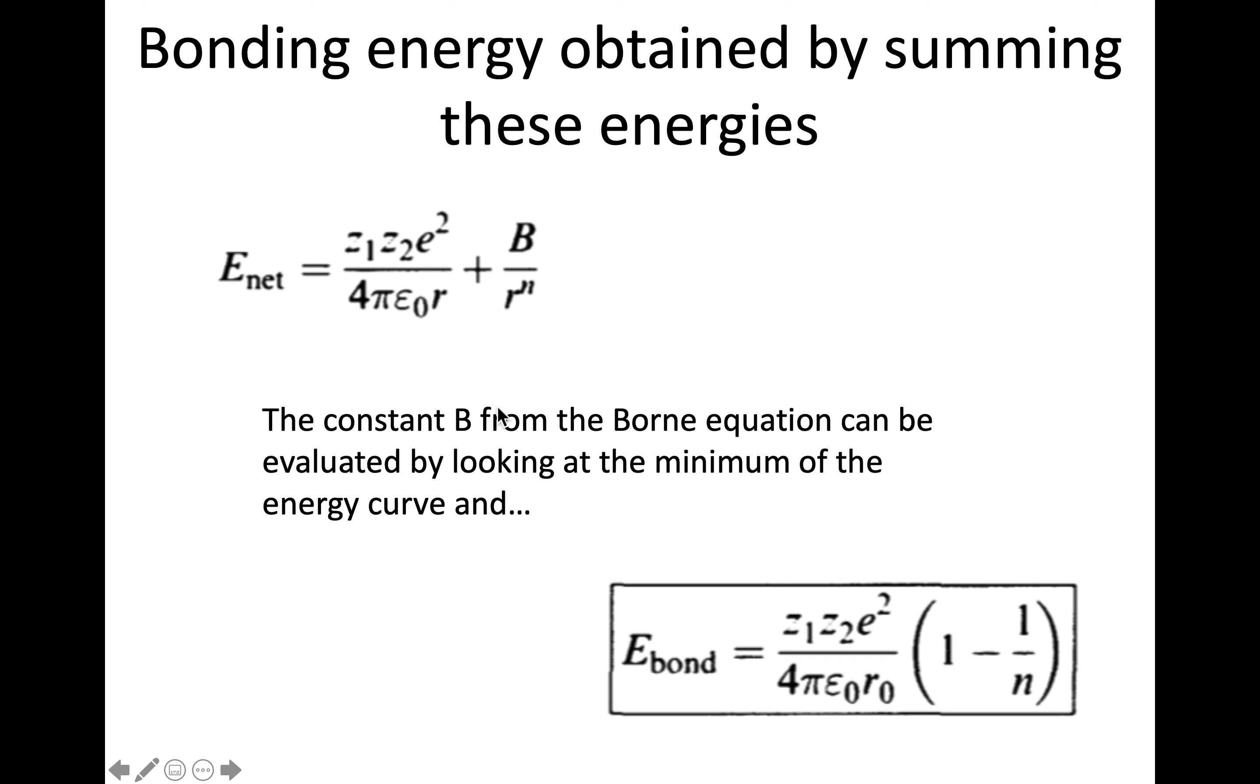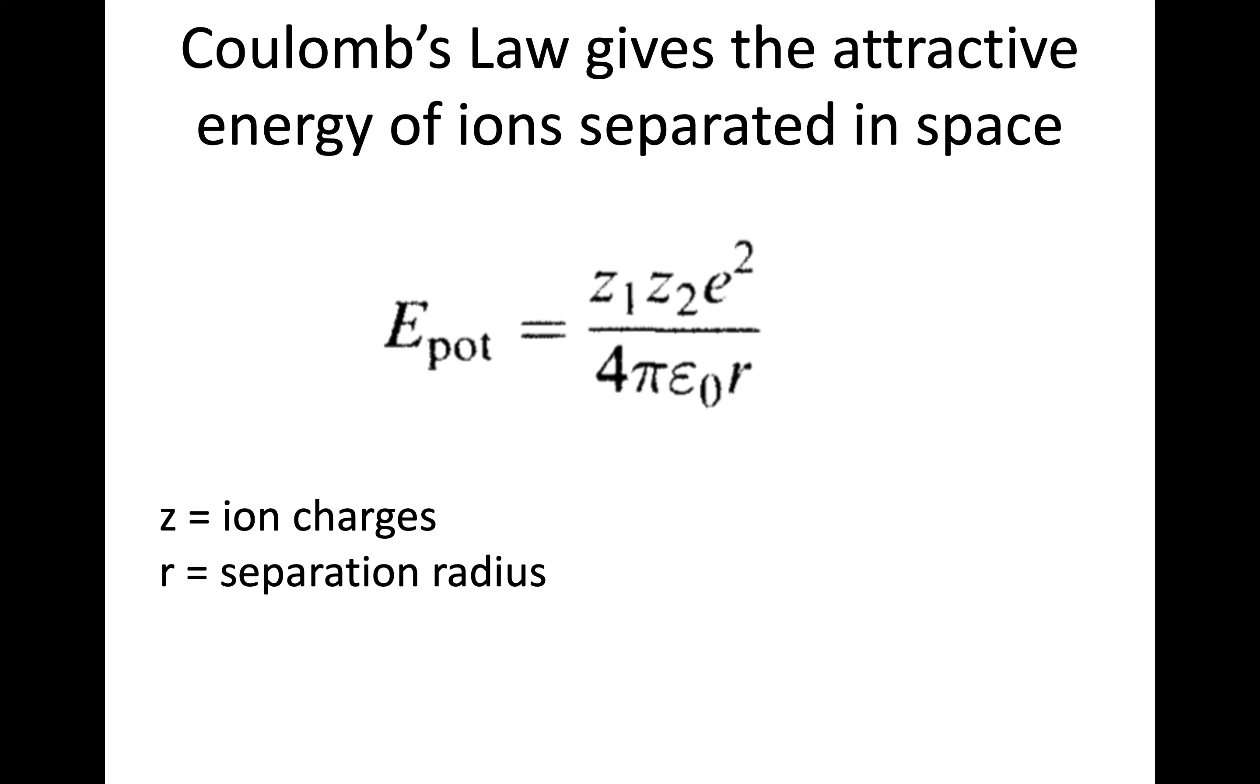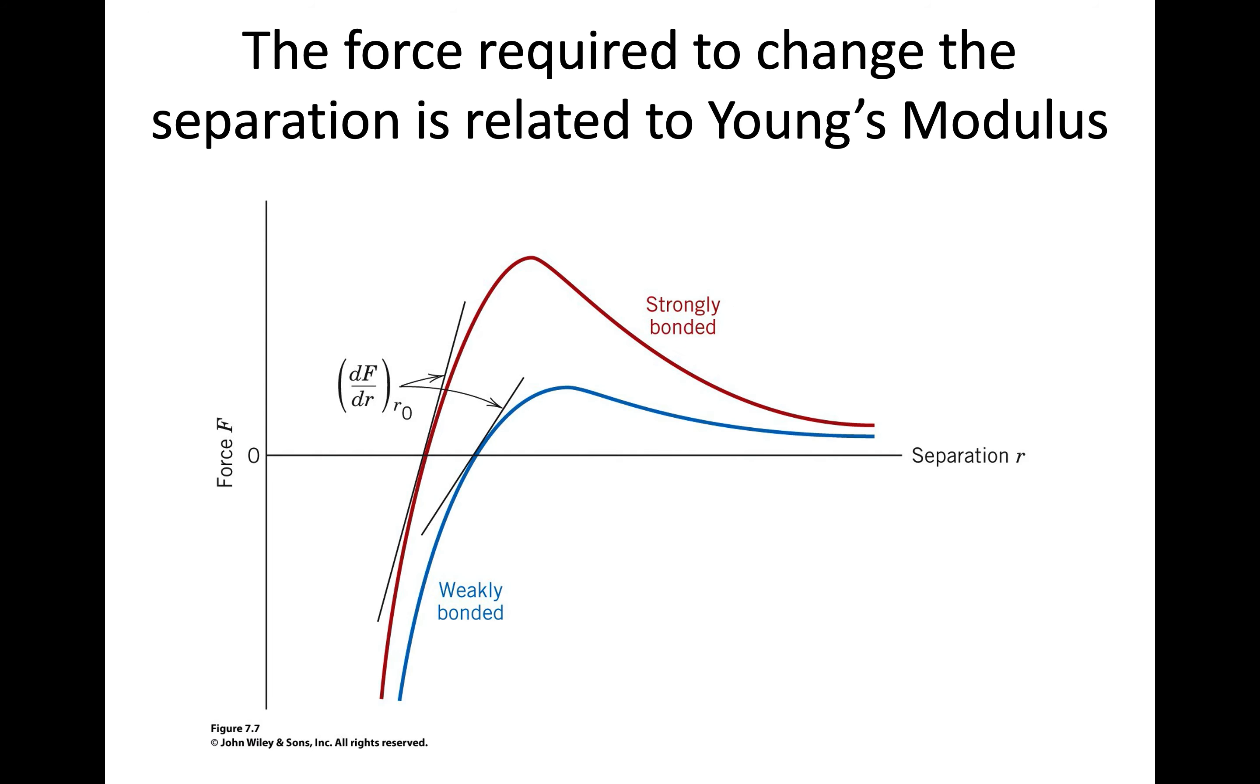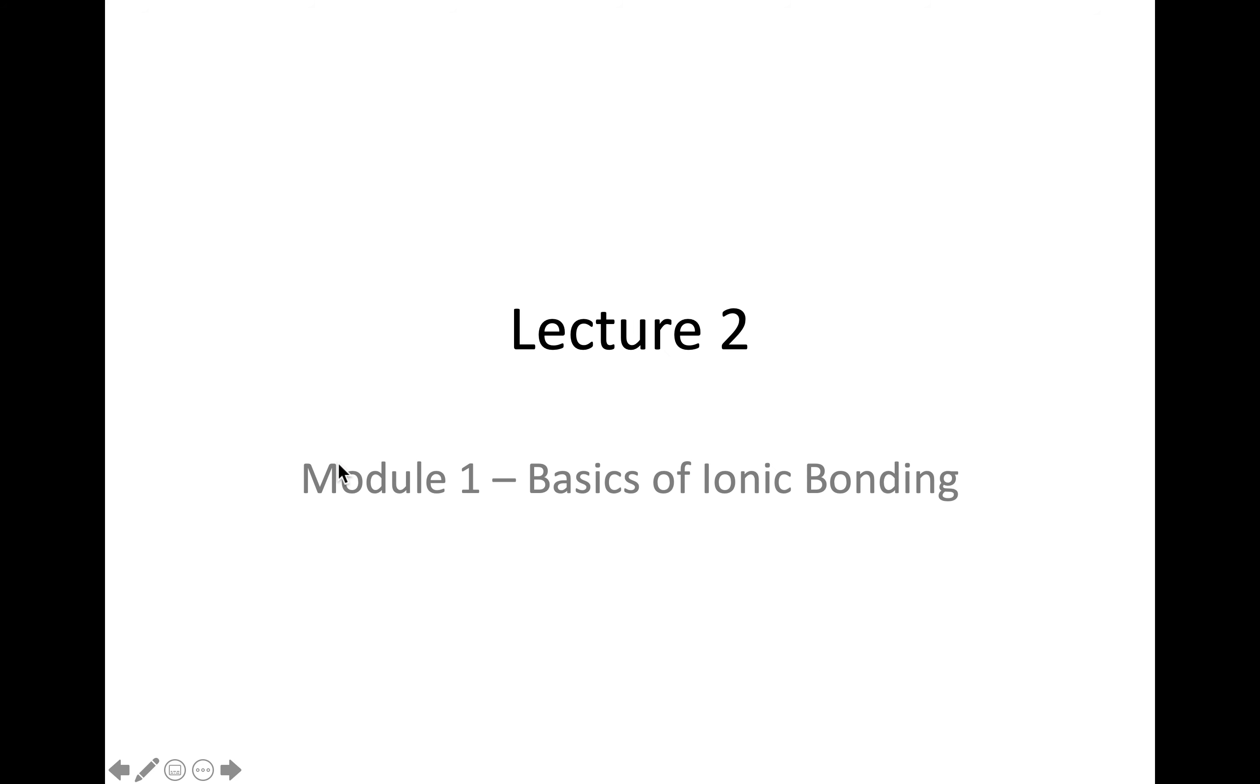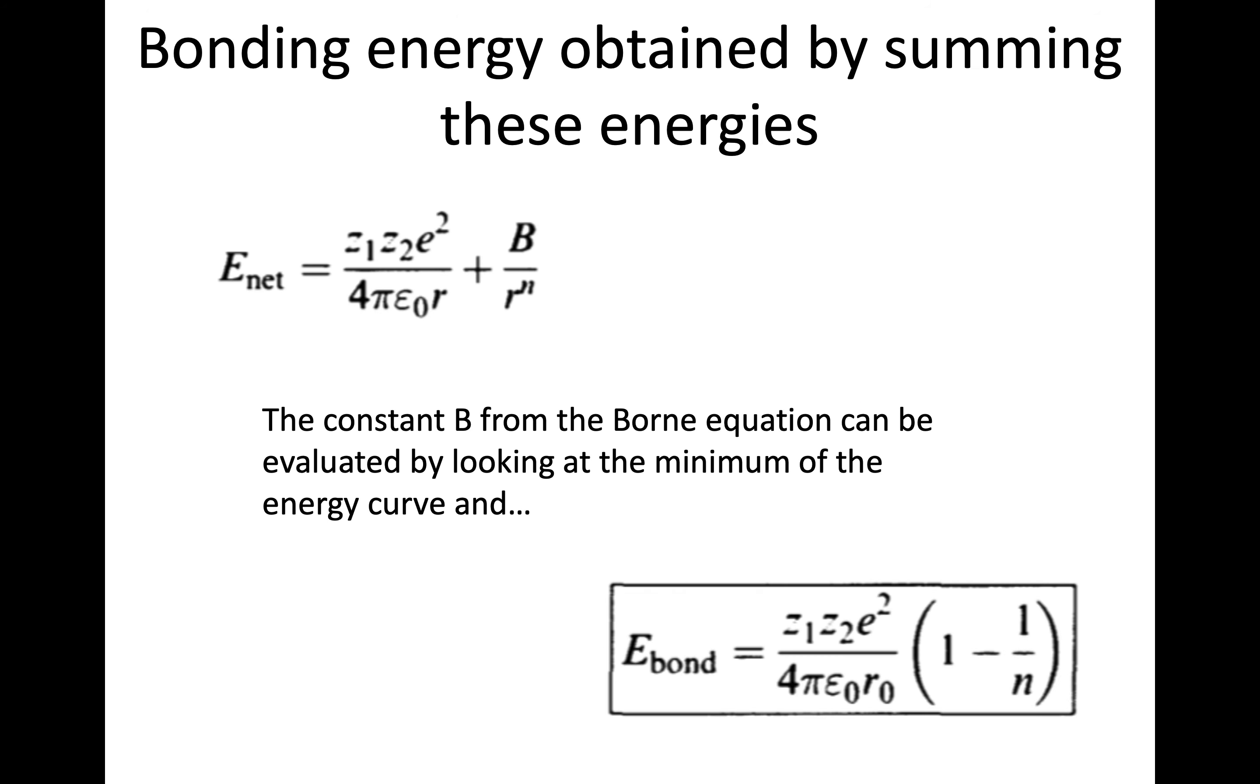Also, we can evaluate that constant B from the Born equation by looking at the minimum of that curve. So looking at the minimum of the bond energy. So let me go back and sort of look at that. So here's the bond energy curve. So we evaluate the minimum. And that can give us the bonding energy for that expression.